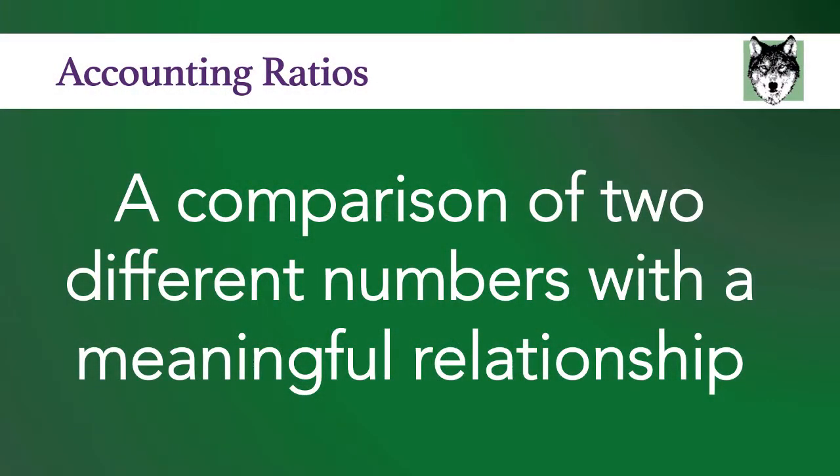So there are many different ways that accounting ratios can help you make better business decisions. Let's start off by explaining what a ratio is. A ratio is a comparison of two different numbers with a meaningful relationship. There are two parts to this: there is a calculation and then there is the meaning. There are hundreds of different accounting ratios. We're not going to go through all of them, but I want to give you a taste of how ratios work.